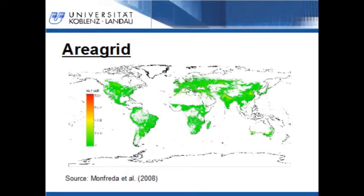This dataset can be downloaded for free from the internet. In the original dataset, the cell attributes represent the harvested area as a percent of the cell area. To get the absolute area per cell, you have to multiply the original grids with an area grid. In this slide, you can see the harvested area grid for wheat. The cell attributes represent the harvested area in hectares per cell. Red areas represent cells with large agricultural areas, and green areas represent cells with small agricultural areas.